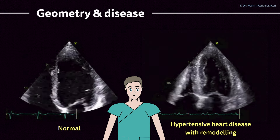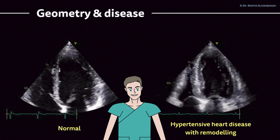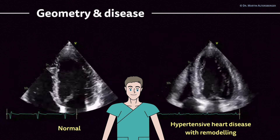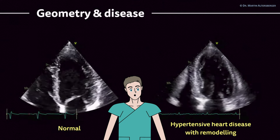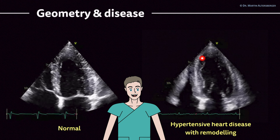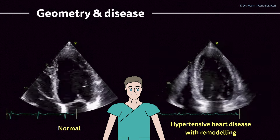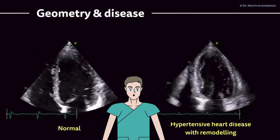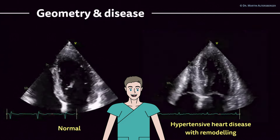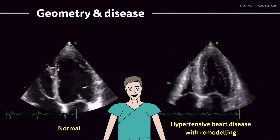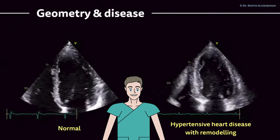Moving forward, we have another example comparing a normal heart with a pathological one. Here the walls of the left ventricle are thickened — this is a patient with severe hypertensive heart disease and remodeling. A remodeled left ventricle means fibrosis is present. The cavity of the left ventricle is smaller compared to the normal variant, and ejection fraction is around 50 percent. Even though ejection fraction appears normal, this heart is definitely not normal — the left ventricle shows damage from long-standing severe hypertension.